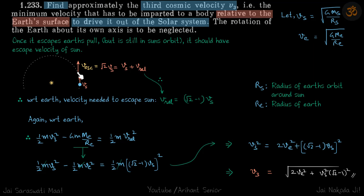So at this moment, when it has escaped earth's gravity, it should still have V escape for the sun. So V escape for the sun is root 2Vs, we know that, we have derived it in previous problems, where Vs is root GMsun by Rs.